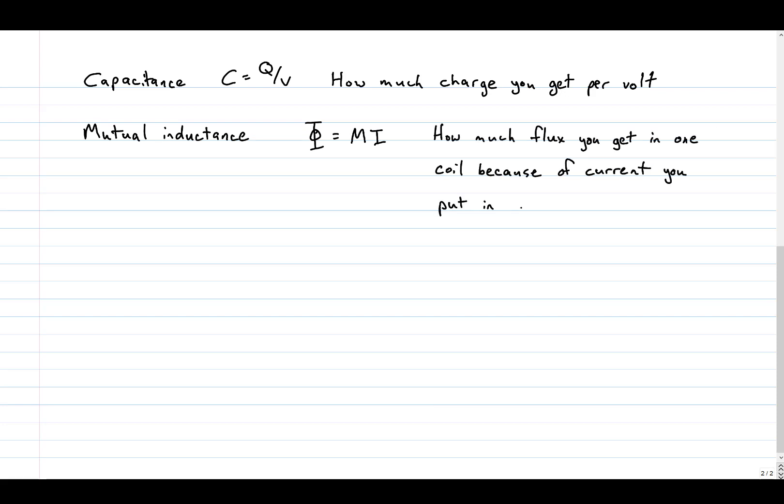On a very deep level, mutual inductance has something in common with capacitance. Capacitance is a ratio of what you get per something spent. It describes how much charge you can get onto some plates per volt that you apply. Mutual inductance is also a ratio. It describes how much flux you'll get through one coil of wire per amp of current that you put through some other wire. In equation form, we have flux φ equals mutual inductance M times current I.